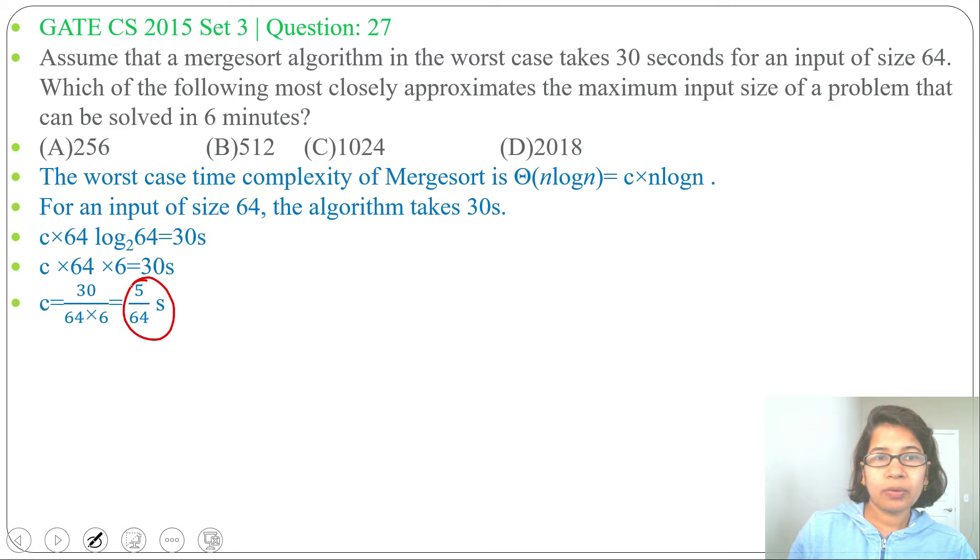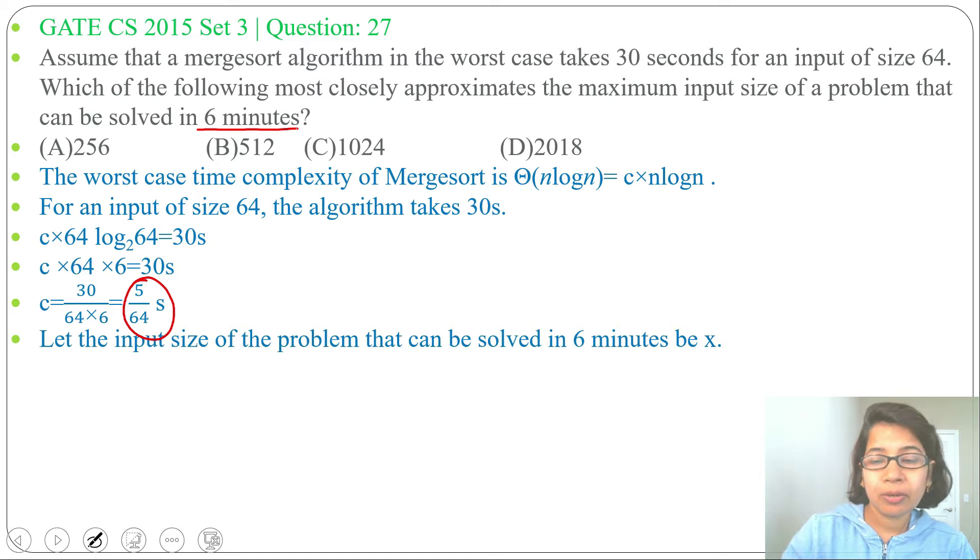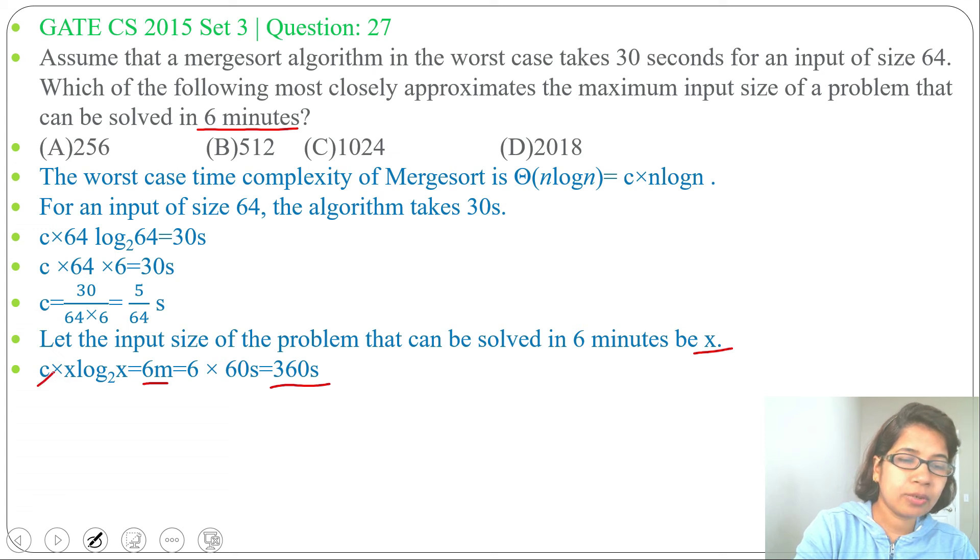We need to find the new input. Let the new input be x. C × x × log₂x equals to 6 minutes. 6 minutes we can convert to seconds, 6 × 60 that is 360 seconds. We have C value equals to 5/64.